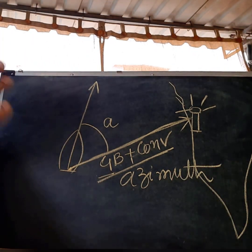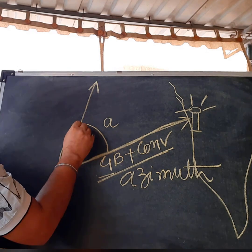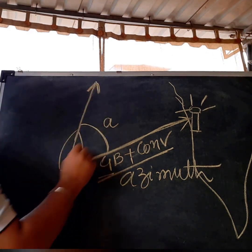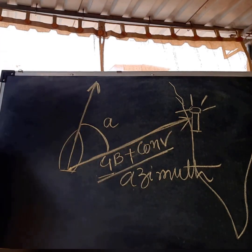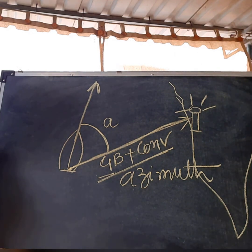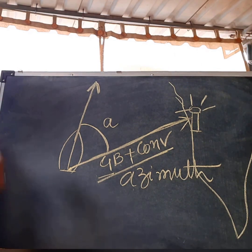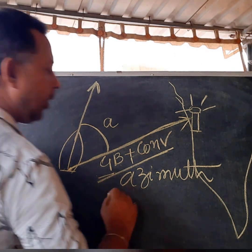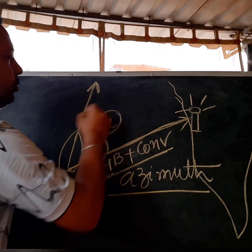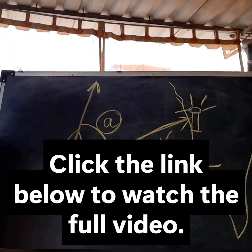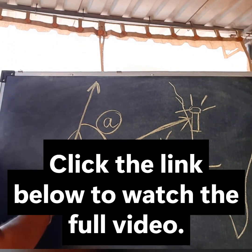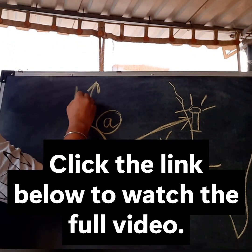You have already measured the angle from the vessel's fore and aft line to the distant object. All you have to do is from this azimuth, subtract that angle to find your own azimuth.